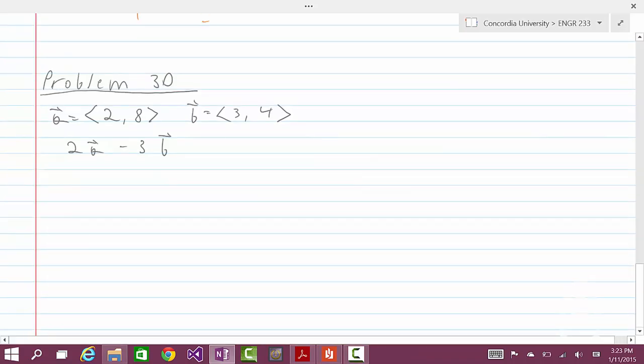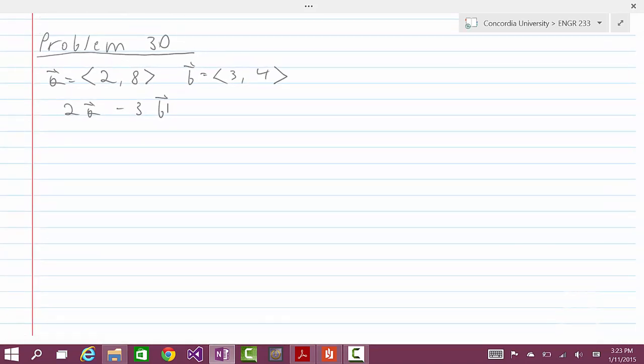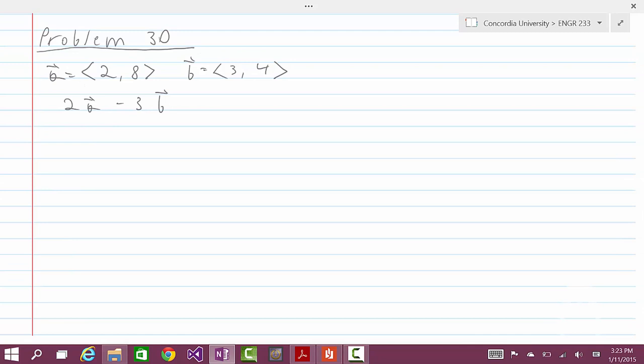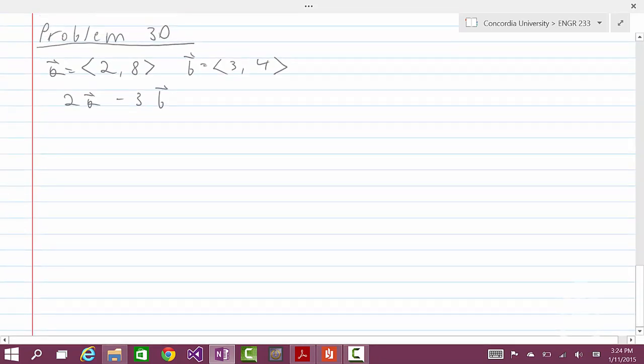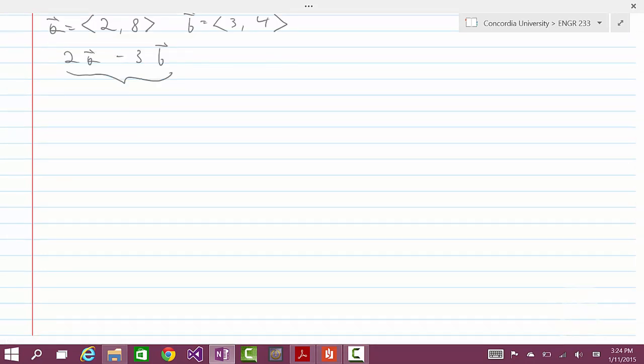So let's get started. The problem here is we have two vectors a and b. a has the components of 2 and 8, or 2i and 8j, and b has components of 3i and 4j, or 3 comma 4. The question here is we have to find the unit vectors for this vector which is found by 2a minus 3b.